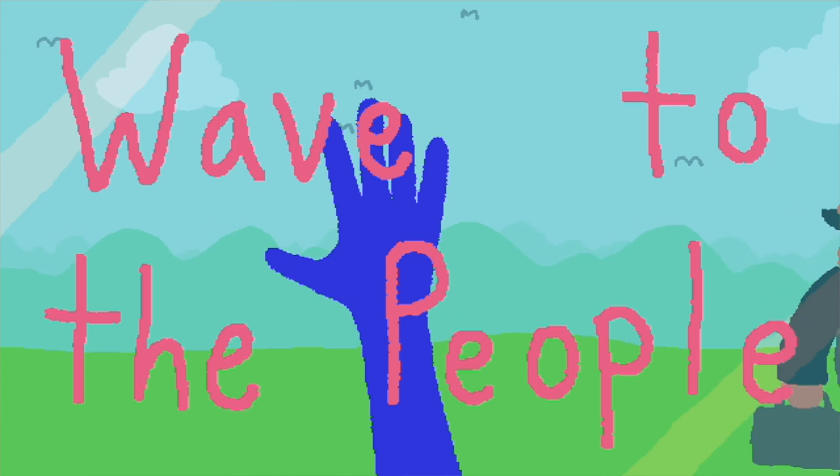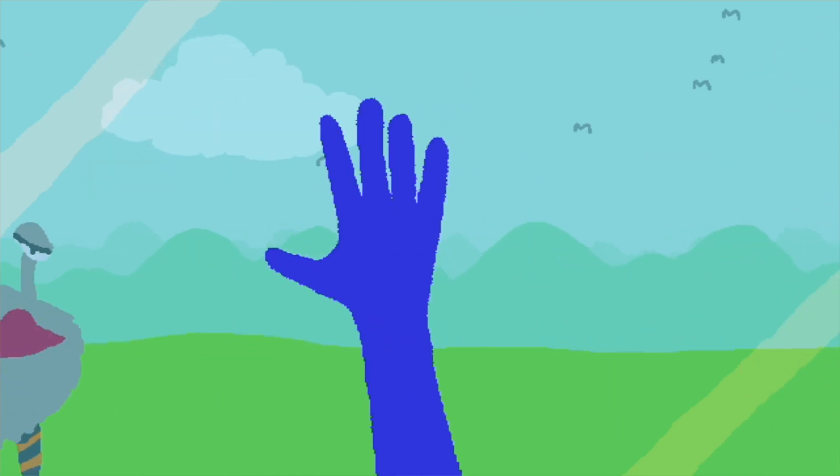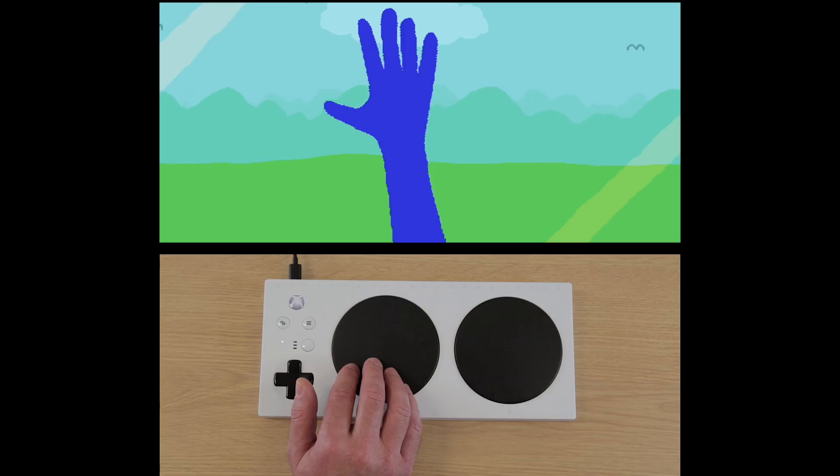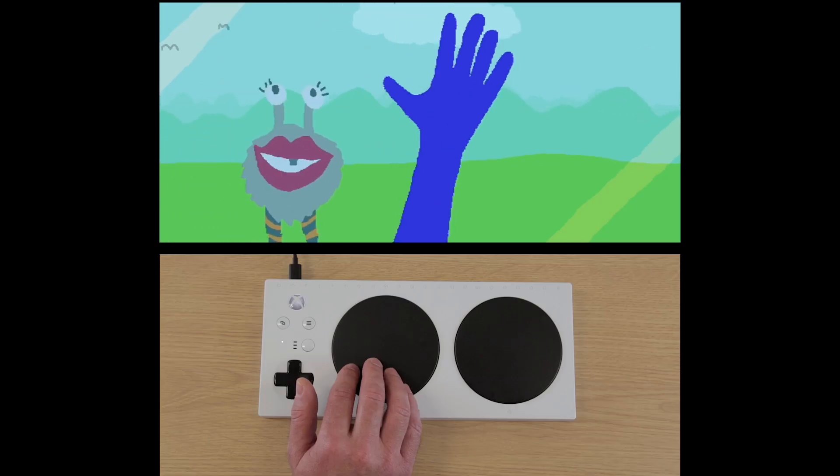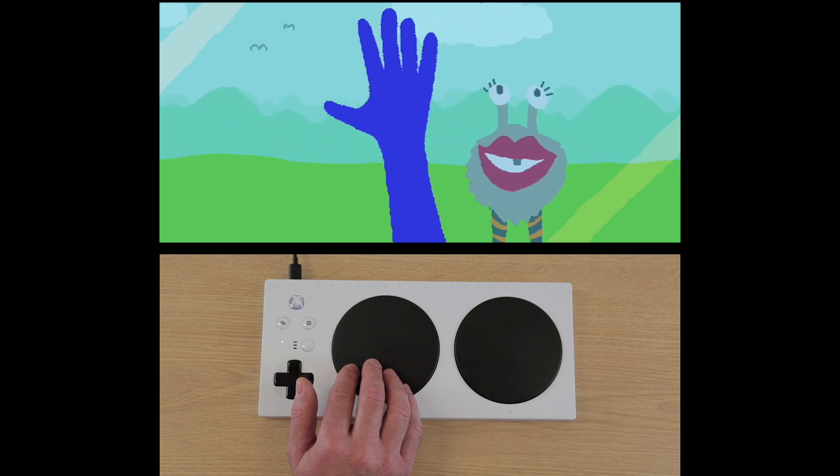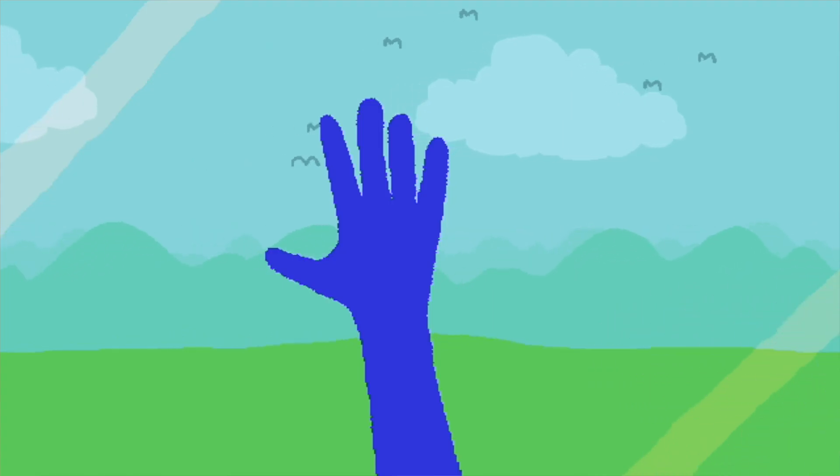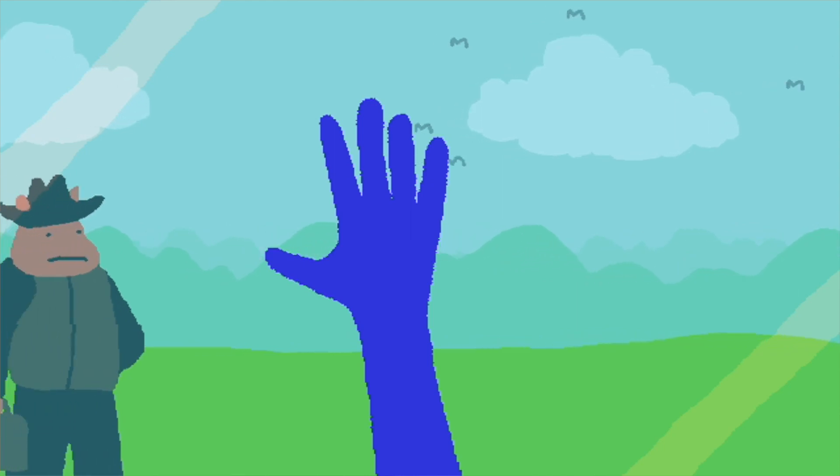This activity is called Wave to the People. With one switch set up as the left click or the space bar, all you need to do is press your button and wave at the people as you go by in a train and hope they'll smile at you or wave back.